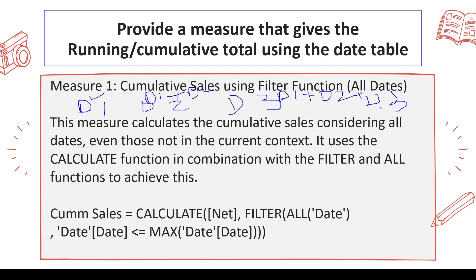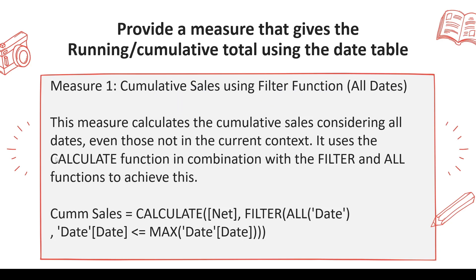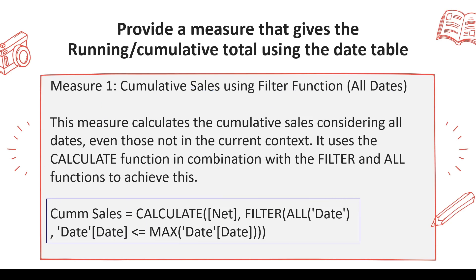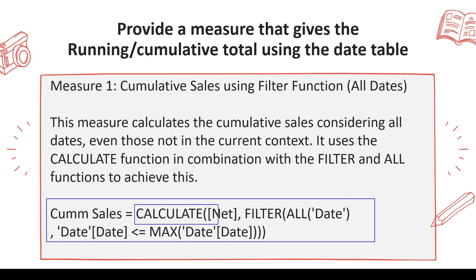It is not necessary that cumulative will happen against date — it can happen against brands, categories, and all other stuff — but it is very commonly used against date. How can we calculate cumulative total or the running total? When we have a date table, we can use CALCULATE.